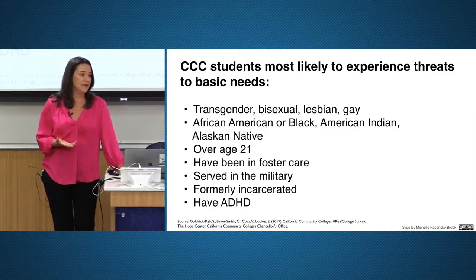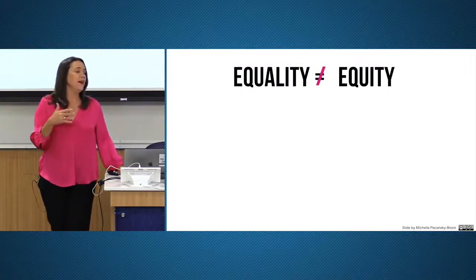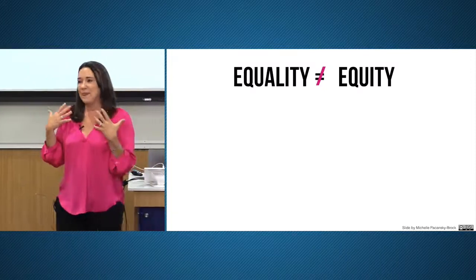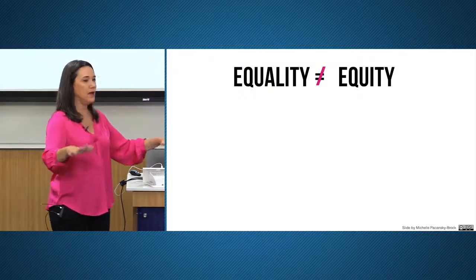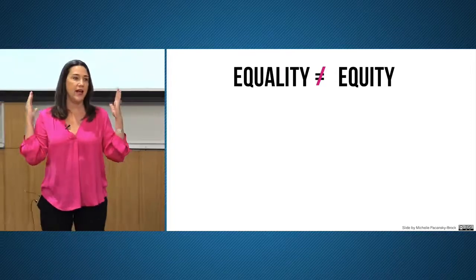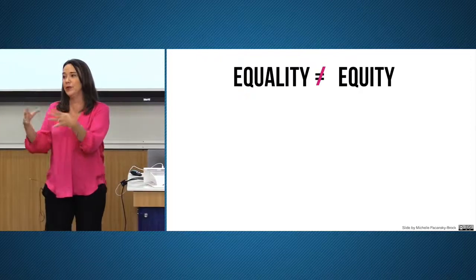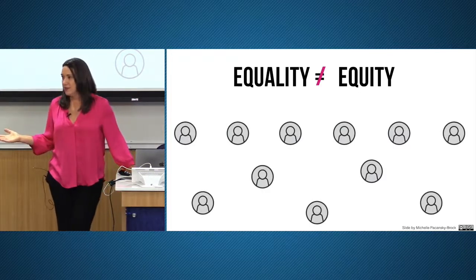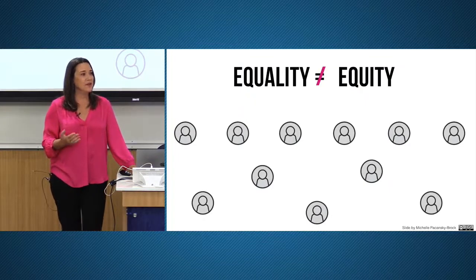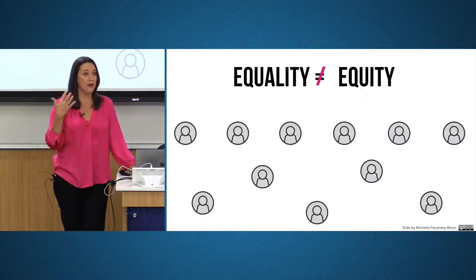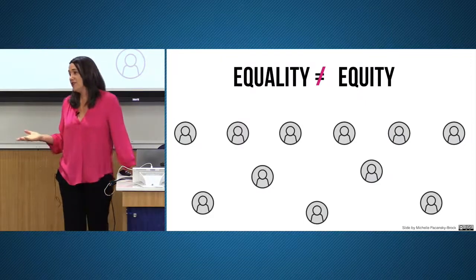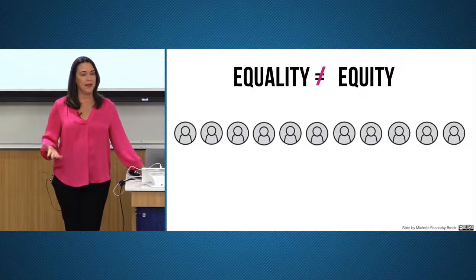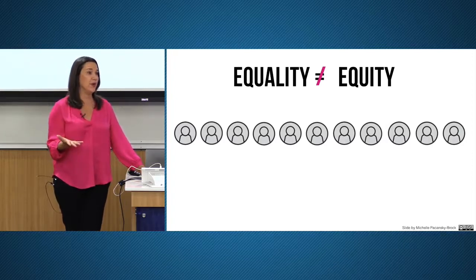We're coming out of a phase in higher education that's been very focused on equality — treating everyone the same. I was in this too: I wanted to be fair to all my students so I treated everyone equally. The problem with that is all our students are in different places with different needs. If we treat everyone the same, we imply that everybody needs the same thing — and that's just not true. When we can start creating environments that give every student what they need, we'll start making strides towards equity, which is very different from equality.